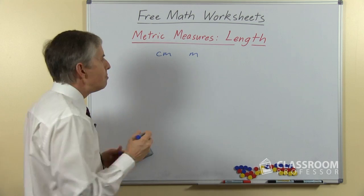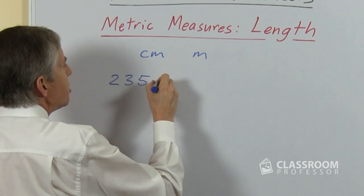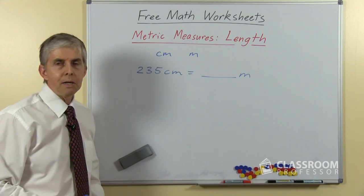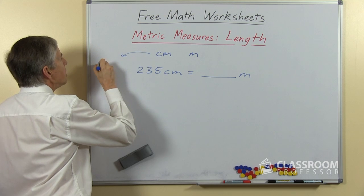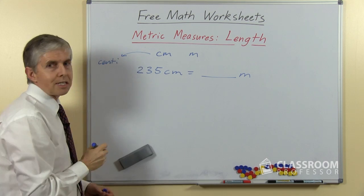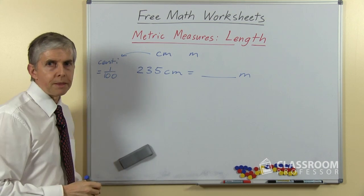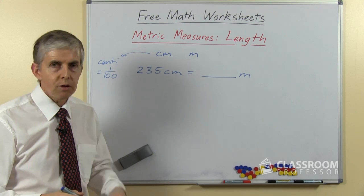So let's look at a centimeters to meters question. Supposing we had 235 centimeters and I said to you how many meters is that? The first thing you need to know is that the prefix centi means one hundredth, so 100 centimeters equals a meter. I'm sure you've heard that before.